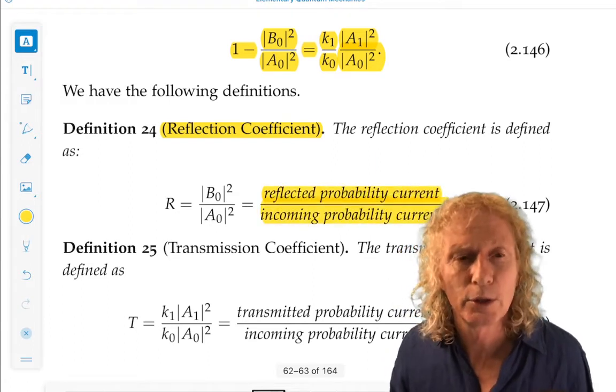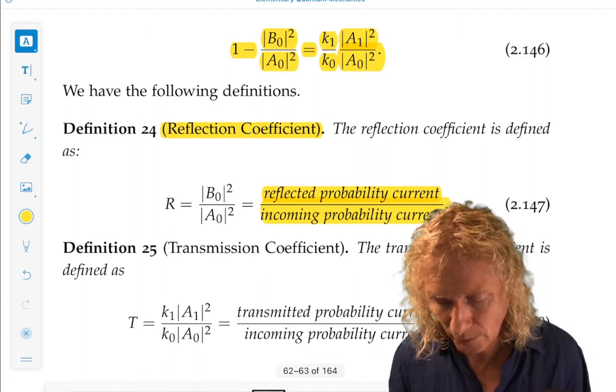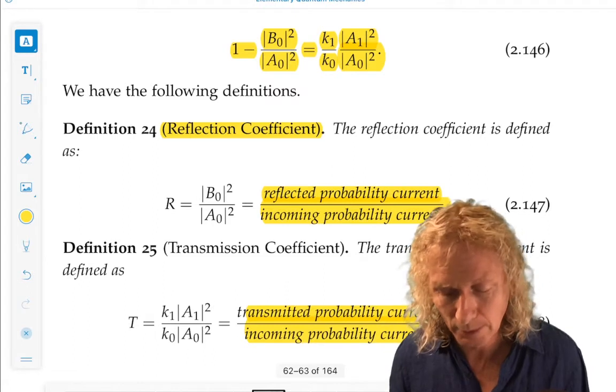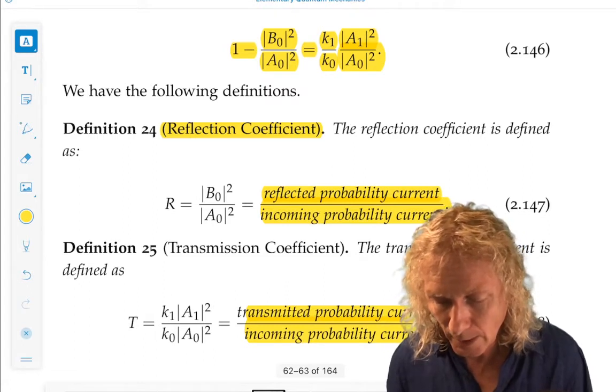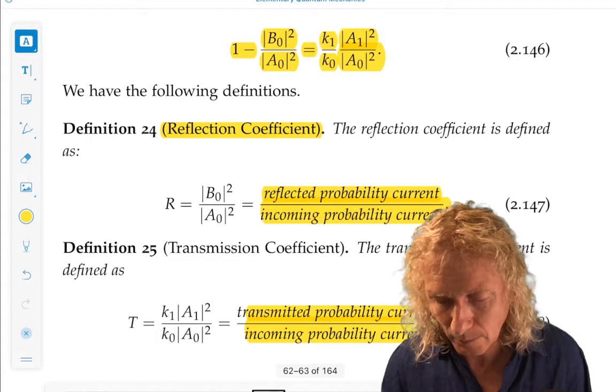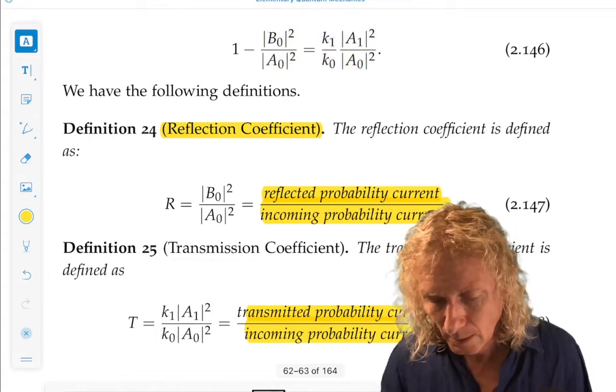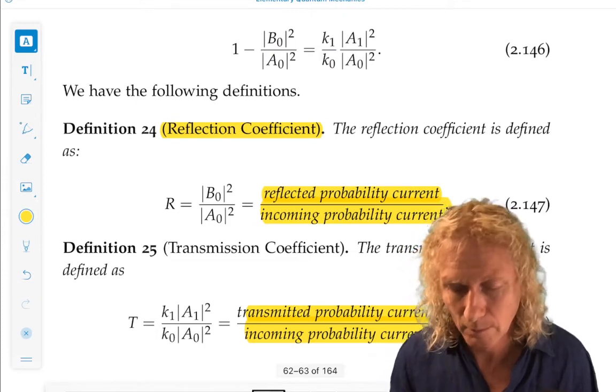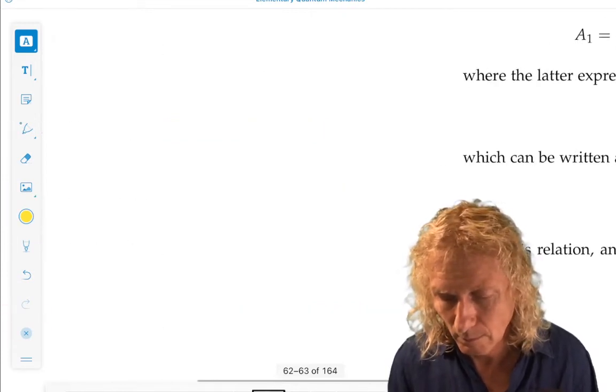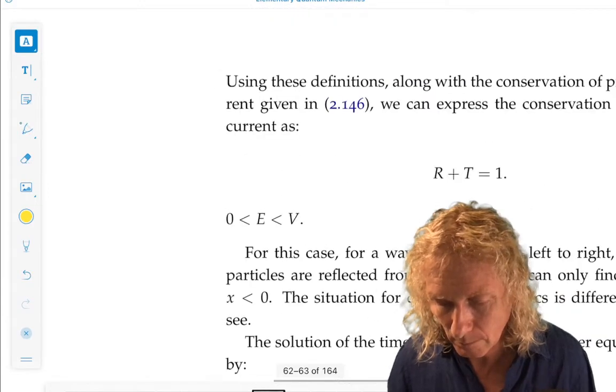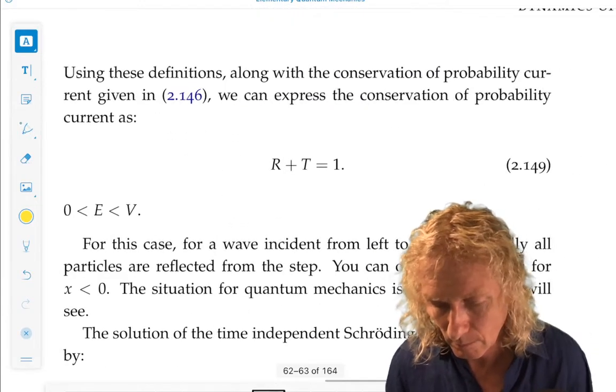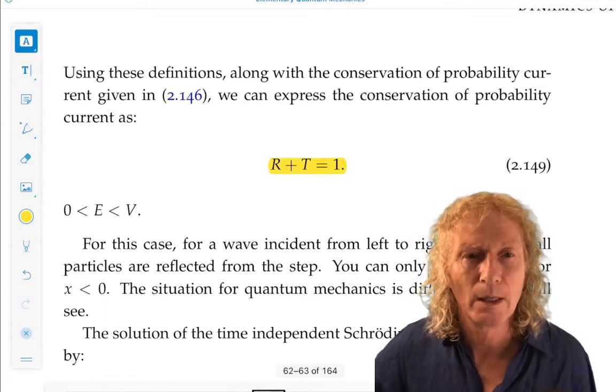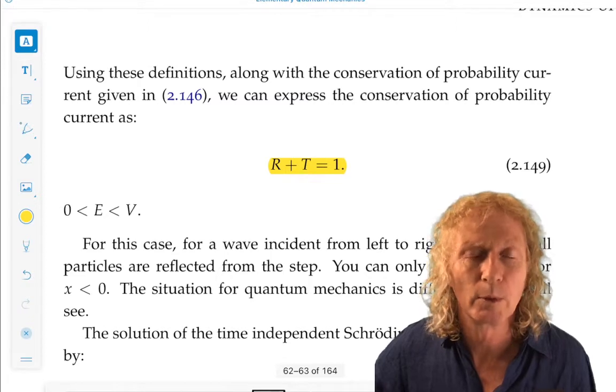And the transmission coefficient, transmitted probability current divided by the incoming probability current. And you can check with these definitions, if you go back to this, that we have reflection coefficient plus transmission coefficient is equal to one. And that's exactly what we should have if probability is conserved, which it is.